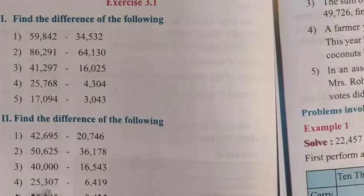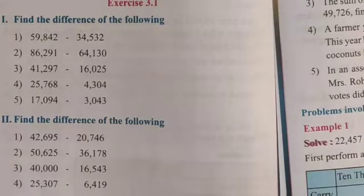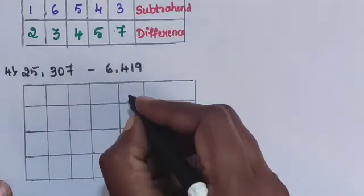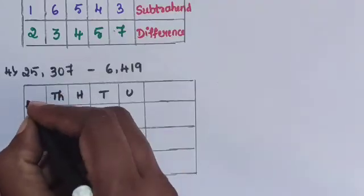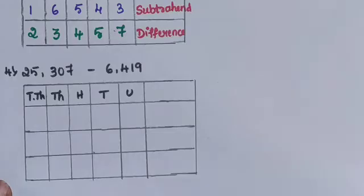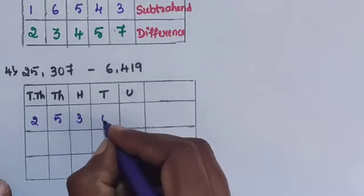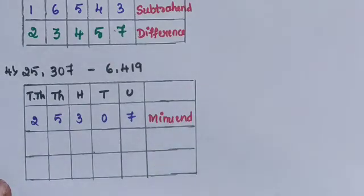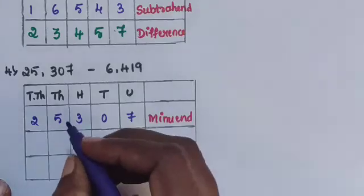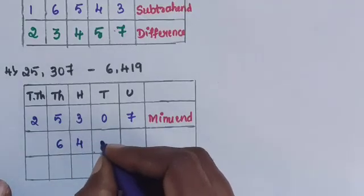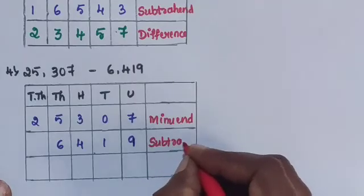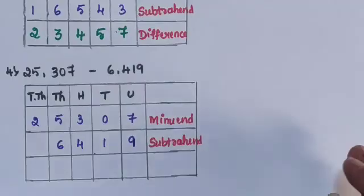Next, question number 4: 25,307 minus 6,419. Arrange the digits in place value columns — units, tens, hundreds, thousands, ten-thousands. 25,307 is the minuend and 6,419 is the subtrahend, with 6 in the thousands place. Find the difference.